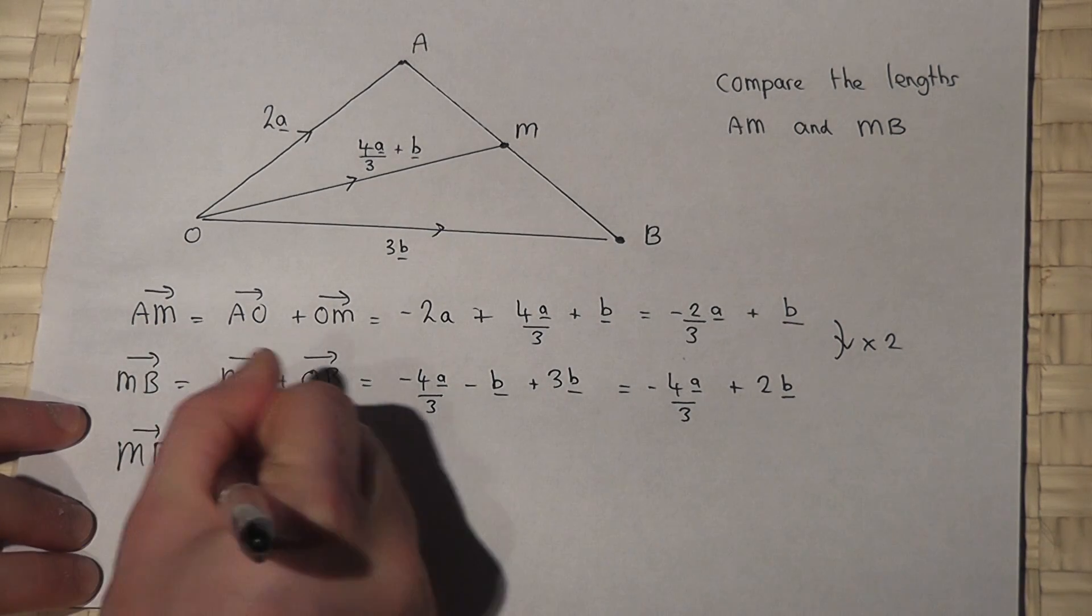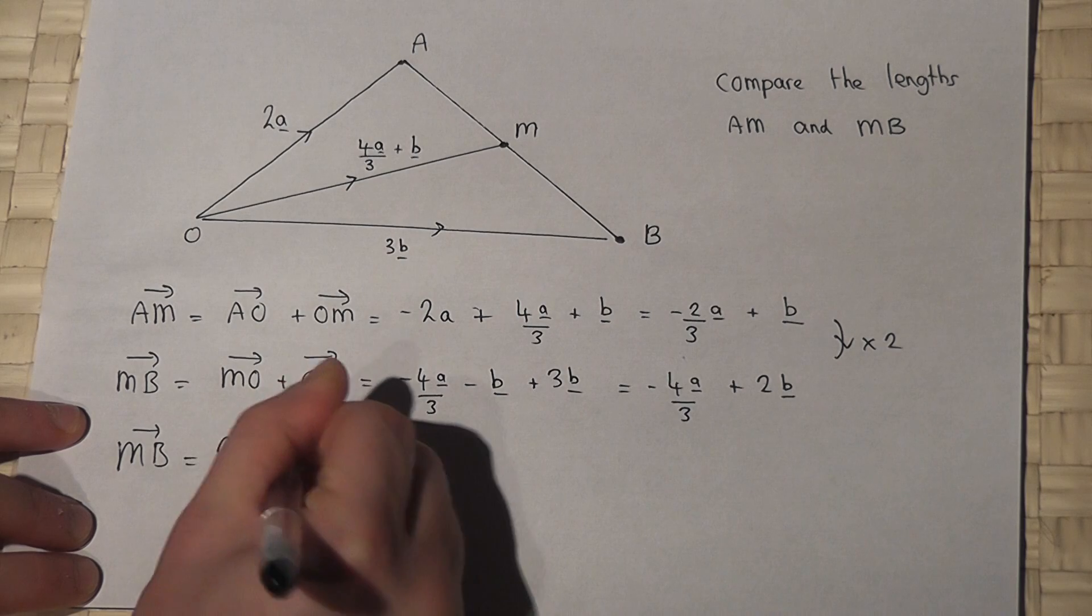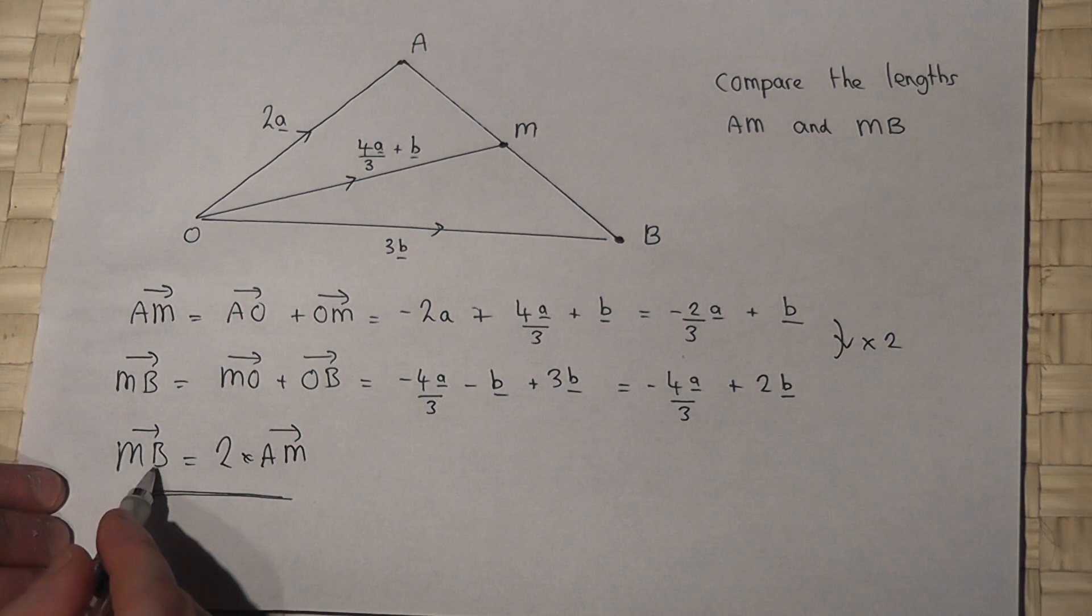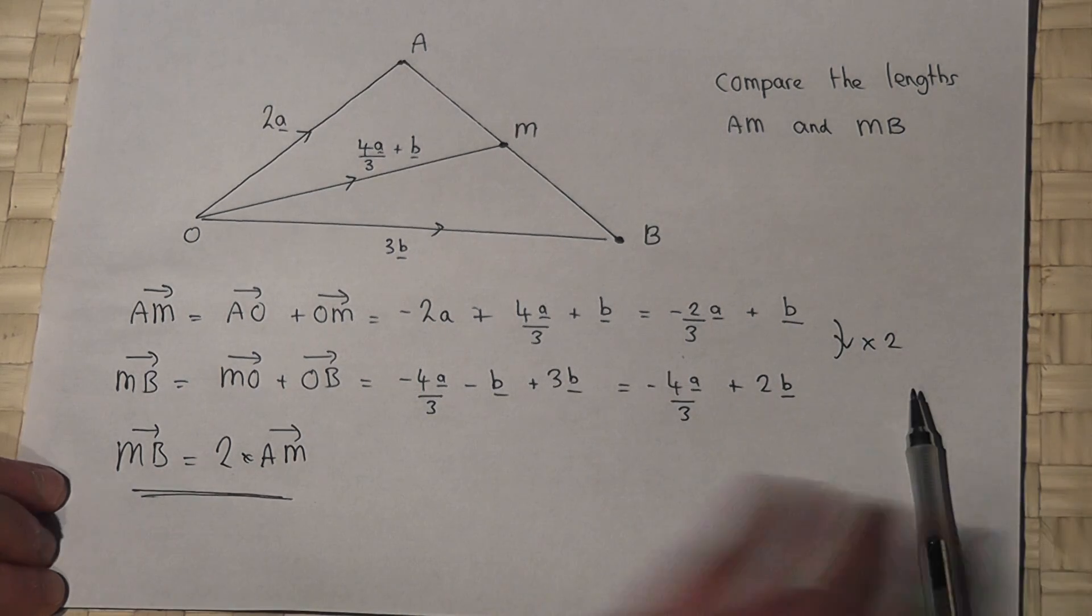So MB is twice AM. So there we go. The length of MB is twice the length of A to M.